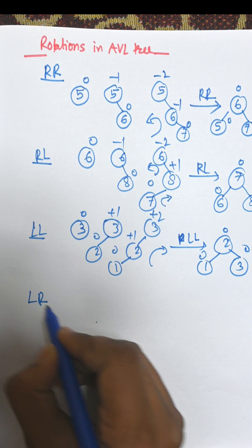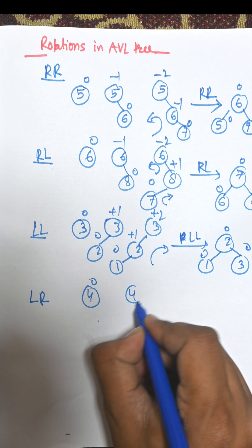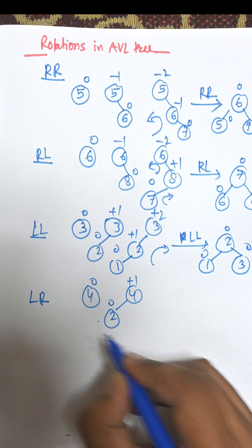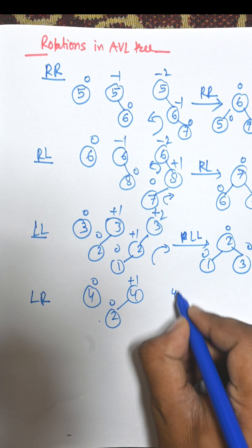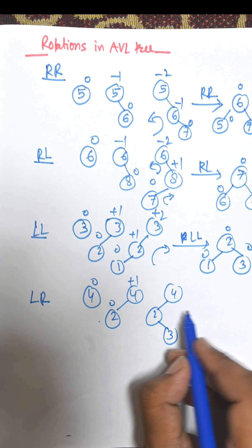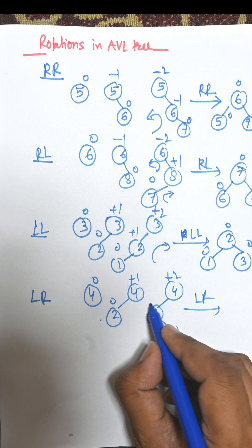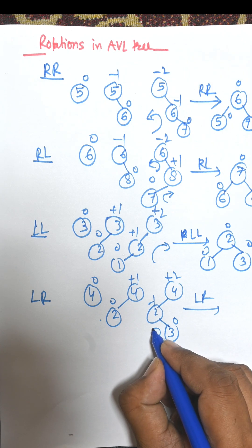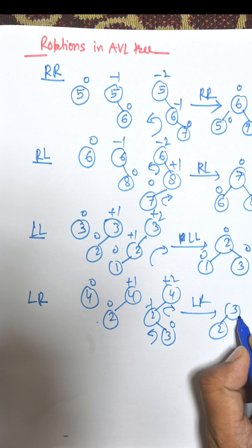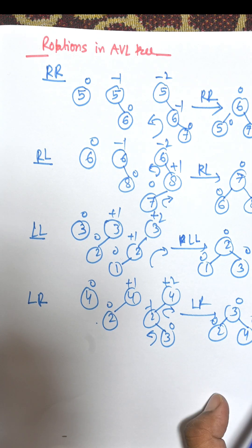The final one is LR rotation. Suppose 4 is the starting node, then 2 is inserted on the left hand side of 4, and height is plus 1, 0. Then suppose we need to insert 3 — it is LR, meaning Left-Right. Height is plus 2, minus 1, 0. There is an anticlockwise then clockwise rotation. So 3 will be the root, 2 goes to the left hand side, and 4 goes to the right hand side. Now it is an AVL tree. So there are 4 rotations in AVL tree.